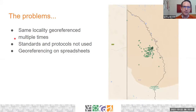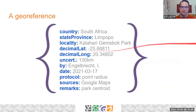Essentially there's been 190 times the amount of work that should have happened for geo-referencing this locality — the same locality being geo-referenced multiple times. We also have issues with standards and protocols not being used, despite quite extensive training for geo-referencing here in South Africa using those protocols, things like the point-radius method. Most people are still geo-referencing on spreadsheets or directly in their collection databases.